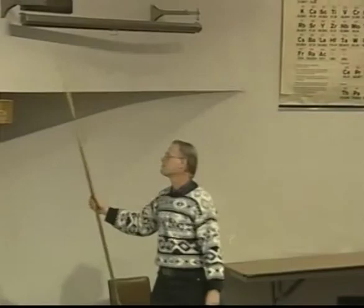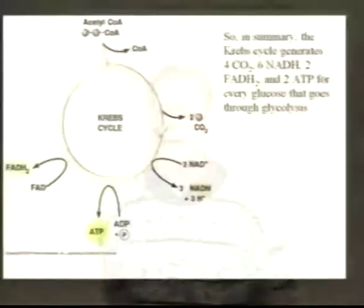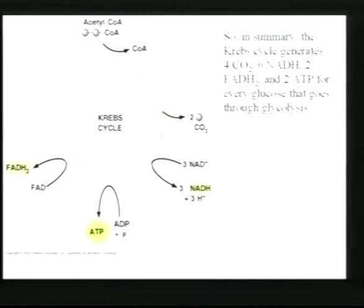In summary: four CO2s, six NADHs, two FADH2s, two ATPs for every glucose. I don't expect you to remember all those intermediate molecules — alpha-ketogluteric acid, malic acid, oxaloacidic acid — who cares? If this were majors-level biology you'd have to remember those, but not here.